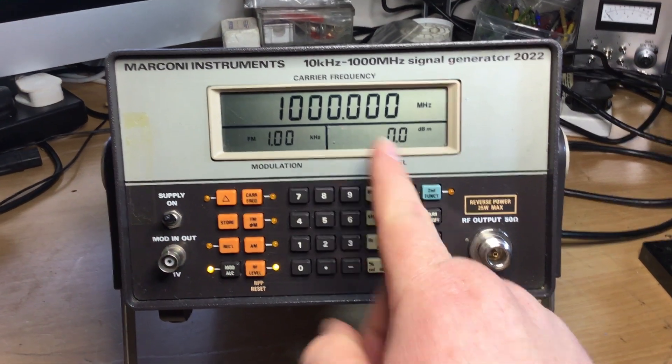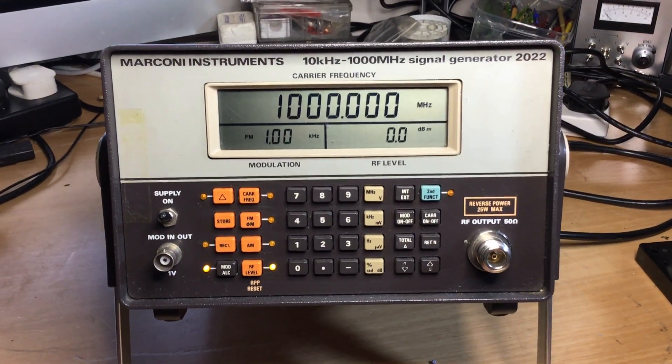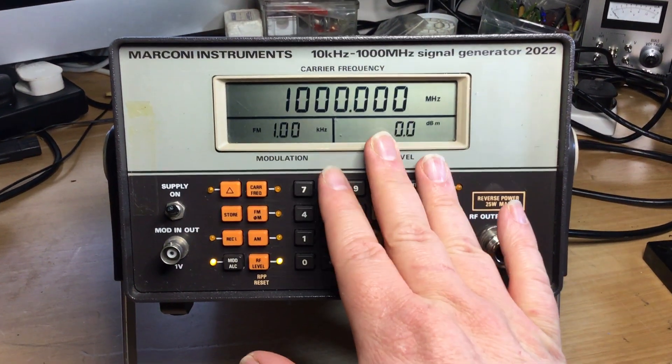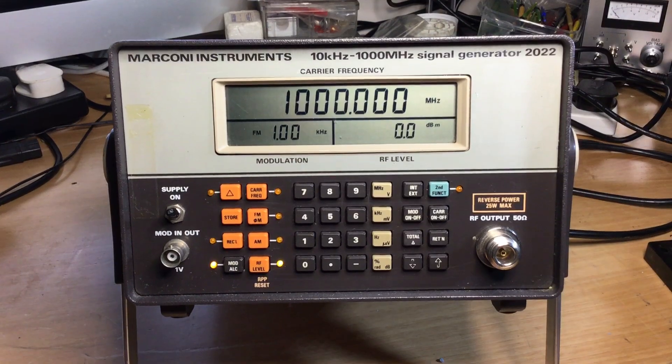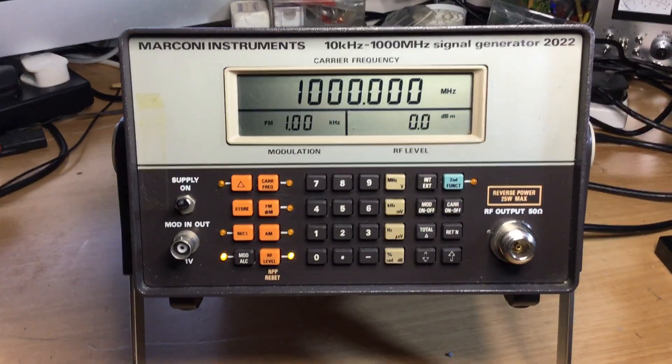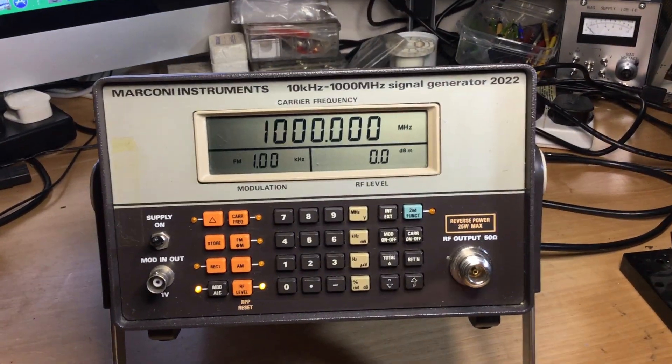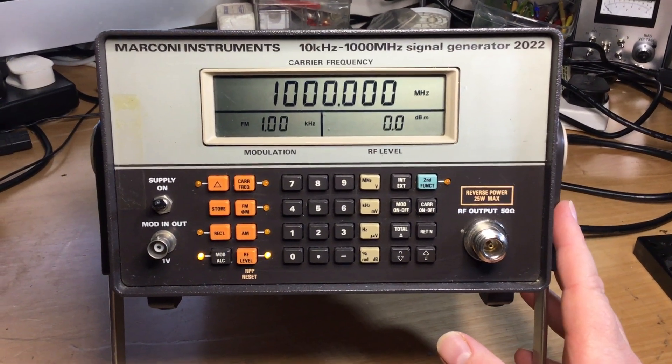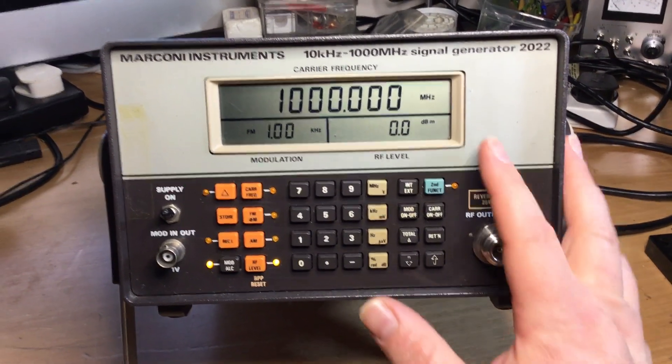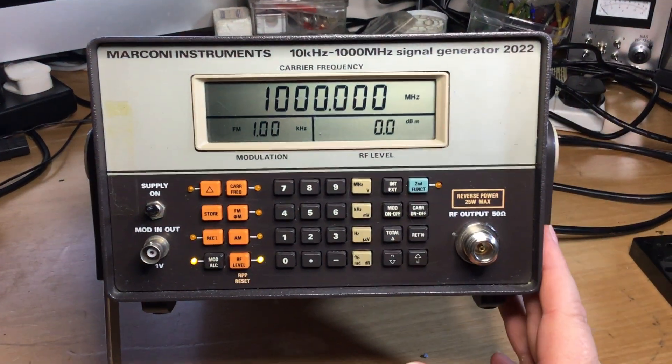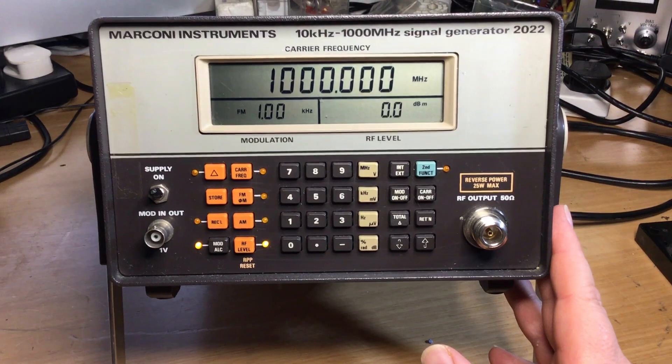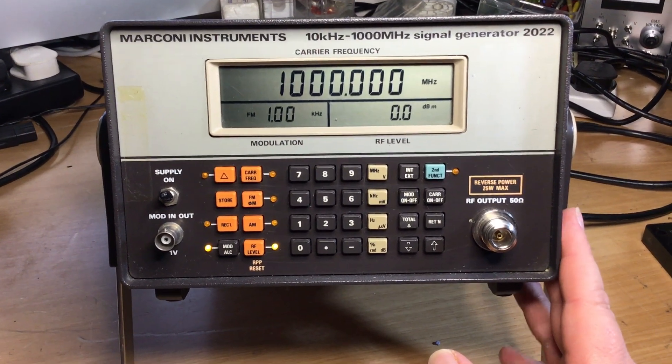It can be quite difficult as well to see the display in certain lighting conditions, and that's my only regret with some of the Marconi instruments—they weren't backlit. But anyway, I mean in this context we can see it quite clearly. These days most test instruments, even some of the older ones, are backlit displays. I dare say you can introduce a backlight to these, but again it's just something that Marconi didn't bother with really.